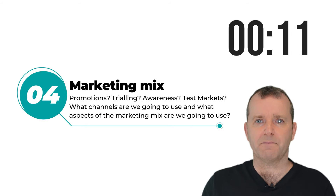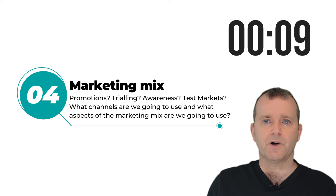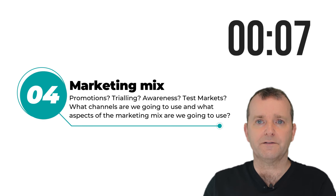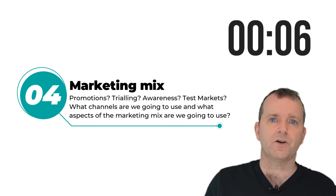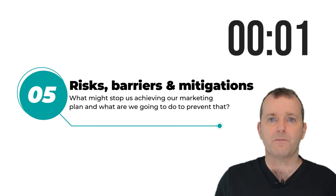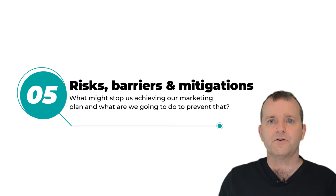Number four: tangibly, what marketing mix are we going to use — are we going to use promotions, trialing devices, advertising? And finally, what are the risks and barriers that might prevent this plan from happening, and what are we going to do to mitigate those risks now that we know them in advance?